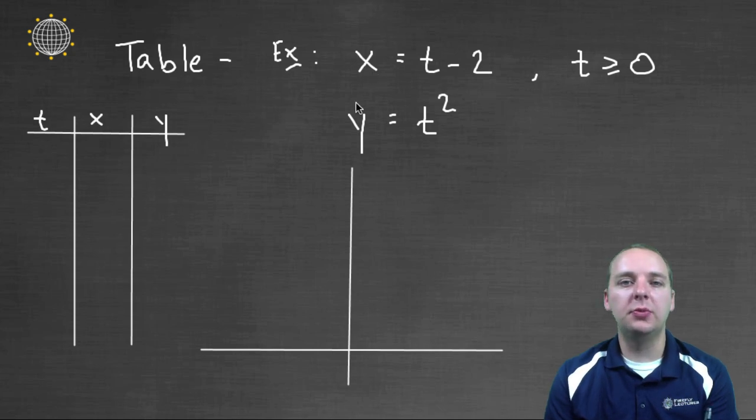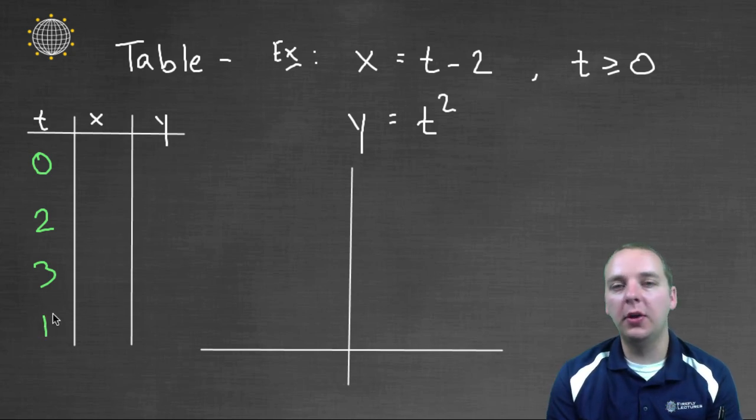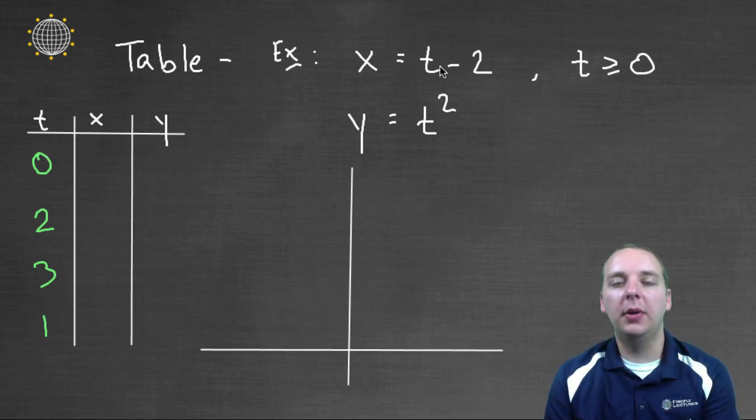Alright, so here's an example. We'll just run through this one real quick. Let's see if we can graph x equals t minus two and y equals t squared for the t's that are positive. So basically all we're going to do is we're just going to pick a few t values. It doesn't really matter what they are. Maybe like zero, maybe like two, and three, and one, or whatever. It doesn't matter. When you pick a time and you plug it in, you'll get x, y locations.